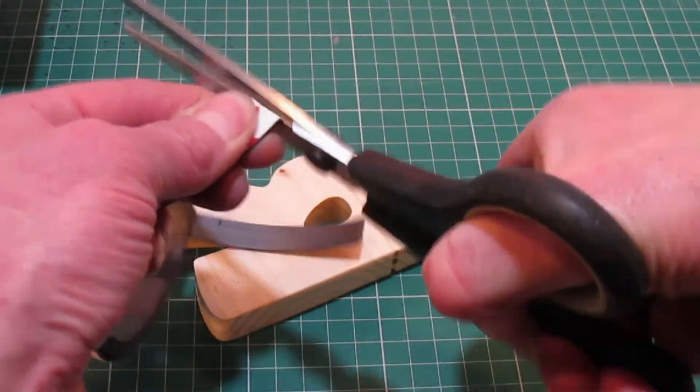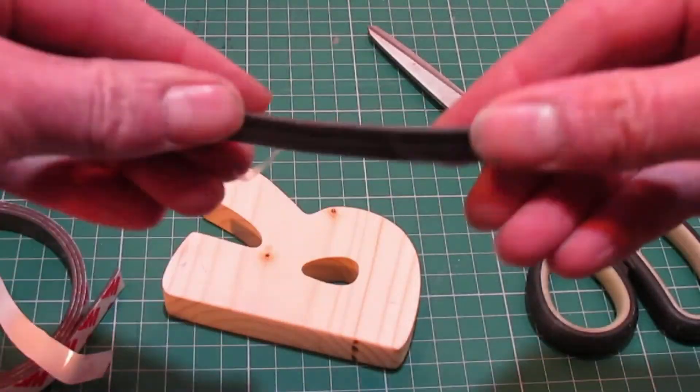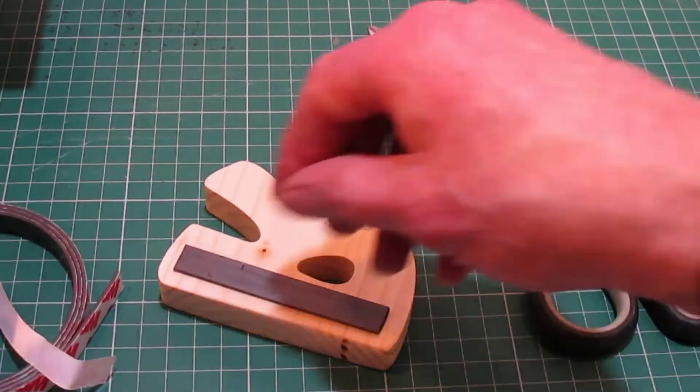12 millimeter wide flexible magnetic strip was easy to cut with a pair of scissors and then stick in place.